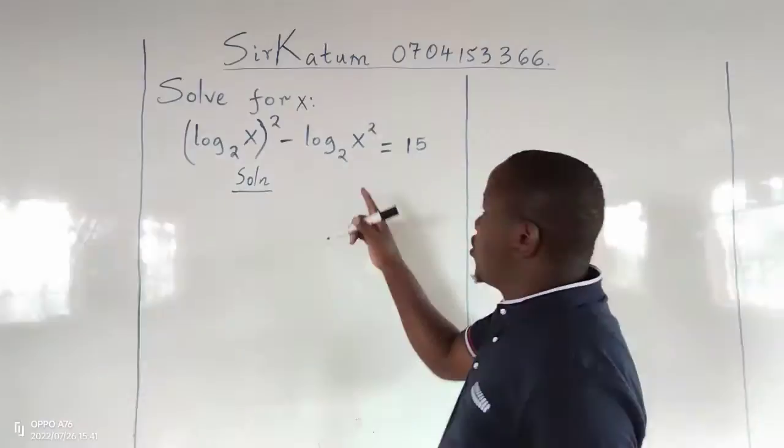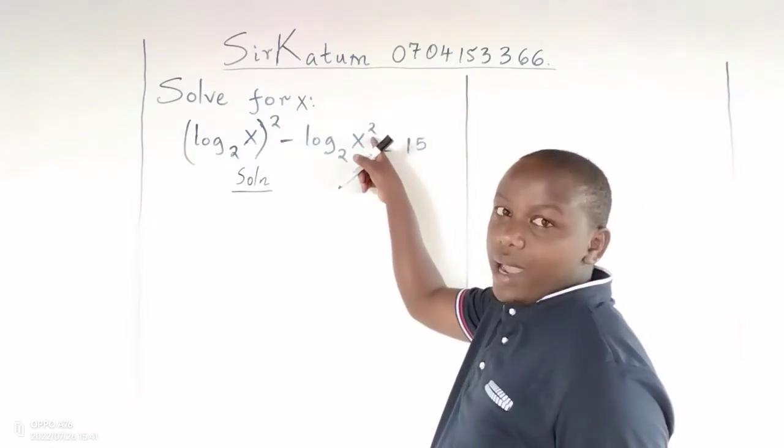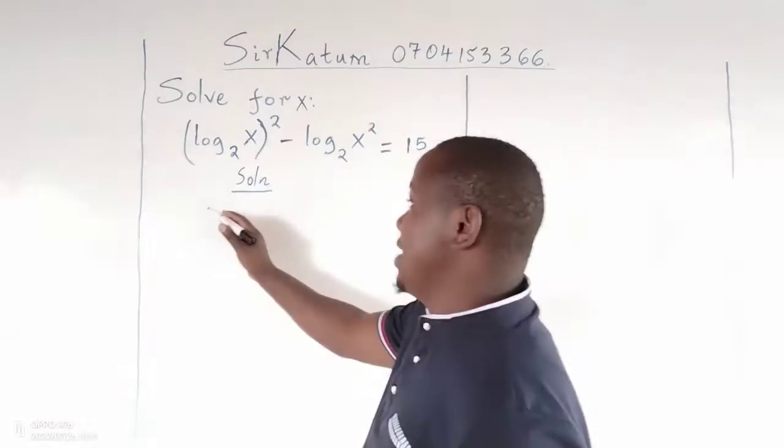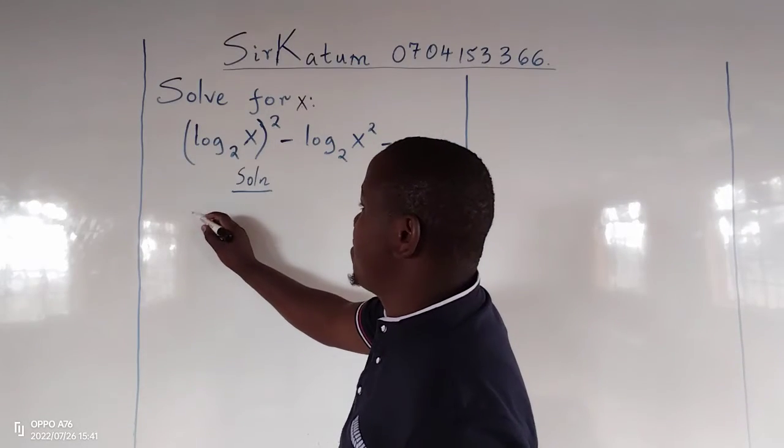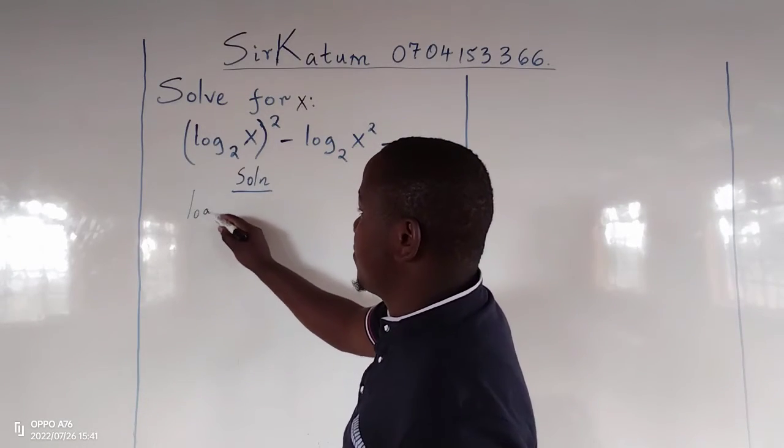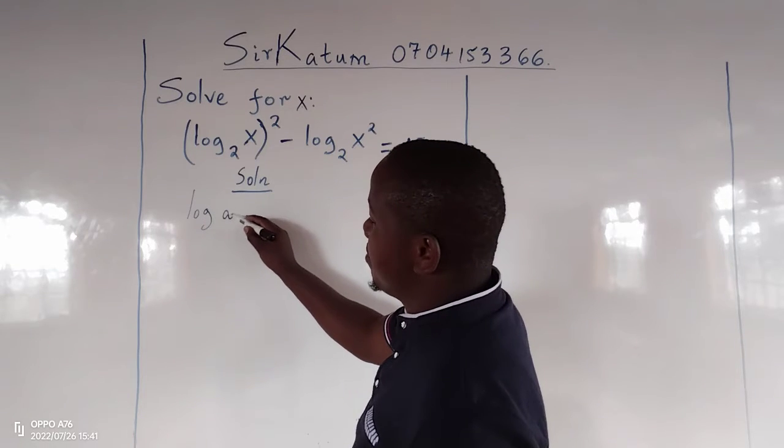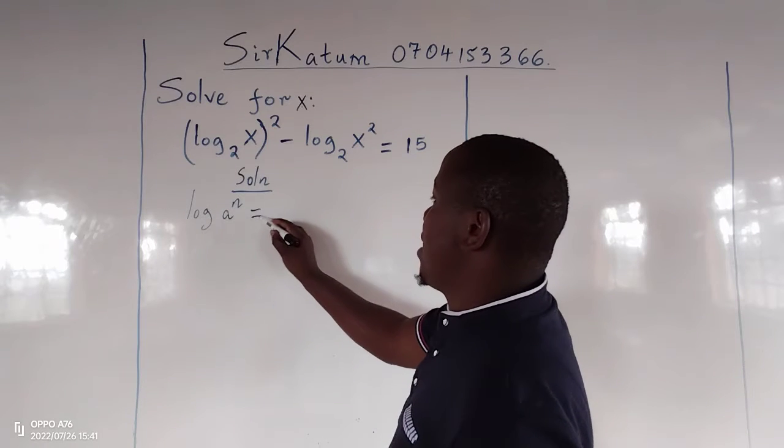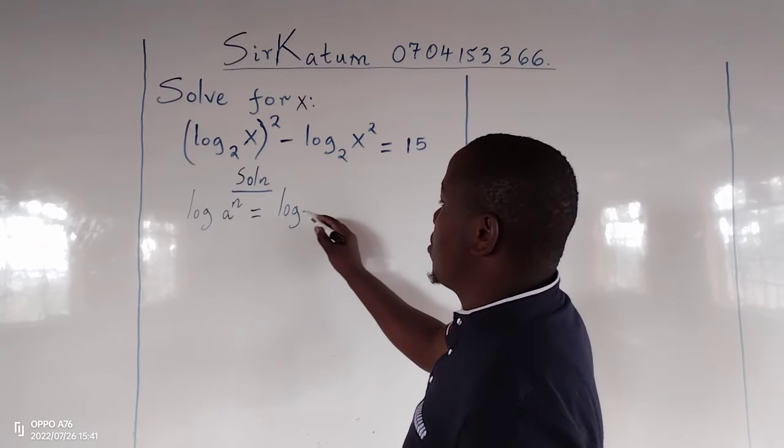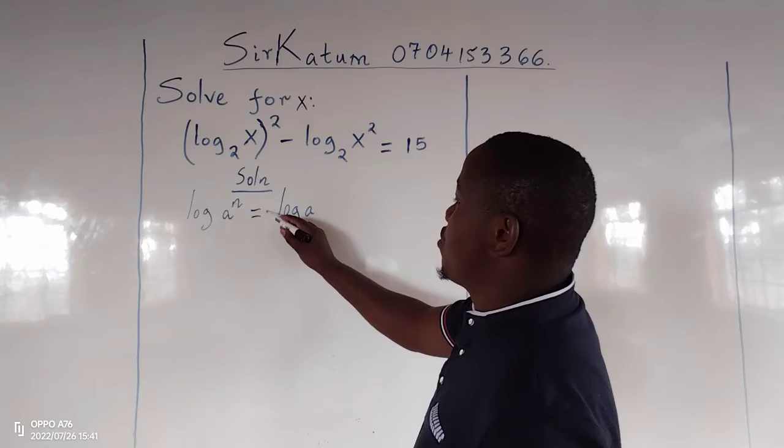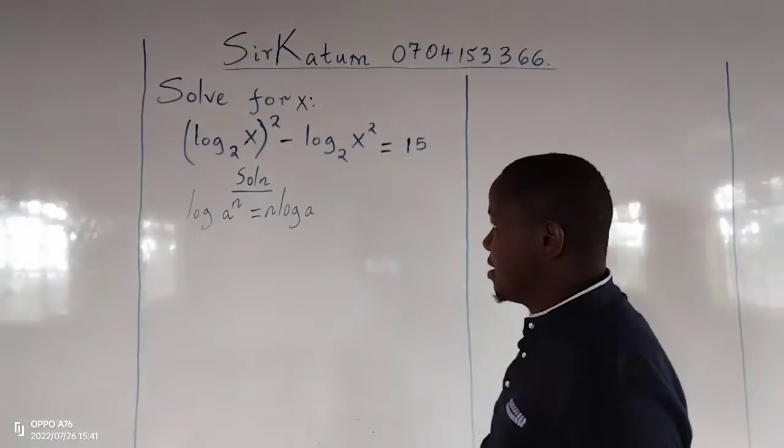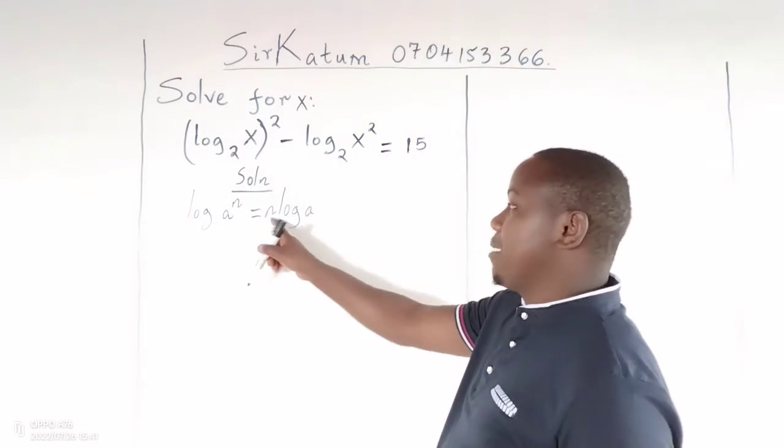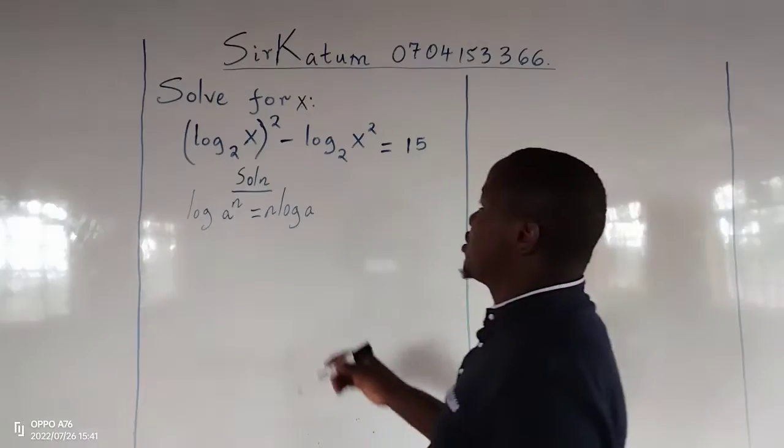One is, because we can see there is a power here, we can engage the law which says that when we have the logarithm of maybe a raised to a certain number, an index n, this is solved by taking the logarithm of a and we drop the index such that it becomes a scalar multiplier to the logarithm.